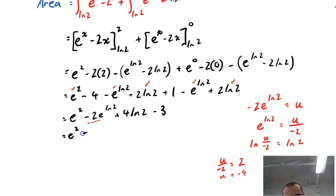So finishing off, we have e squared negative 4 plus 4 ln2 minus 3, e squared plus 4 ln2 minus 7. That's the area under the curve, we can type that into a calculator and get an approximate number if we want, but that's the exact number.